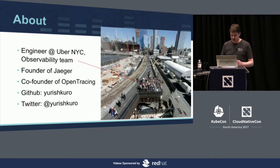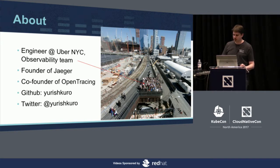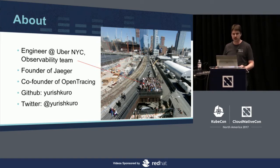As an introduction, why you should care about anything I say: I've been doing tracing for about two years. I work at Uber in New York on the observability team. I was a founder of the Jaeger project at Uber and also a co-conspirator in the OpenTracing project when we started two years ago. You can find me on GitHub and Twitter.